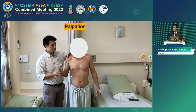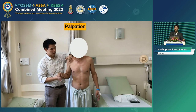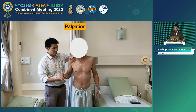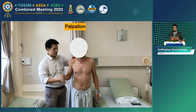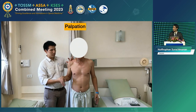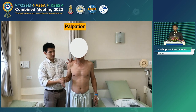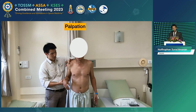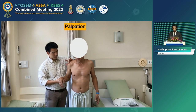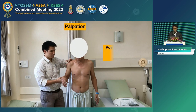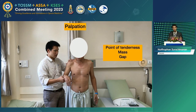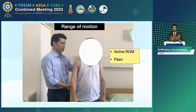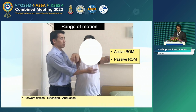For palpation, we start from the medial part to the lateral — starting from the AC joint, cervical AC joint, coracoid, greater tuberosity, bicipital groove, greater tuberosity — to localize the point of tenderness. We may also palpate the mass and the gap of the cuff tear if the patient has thinned skin.